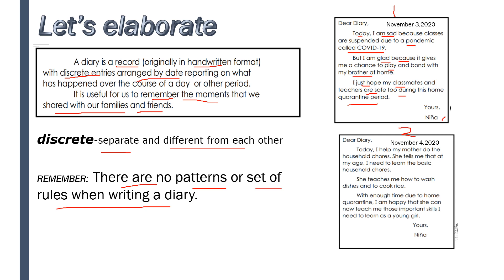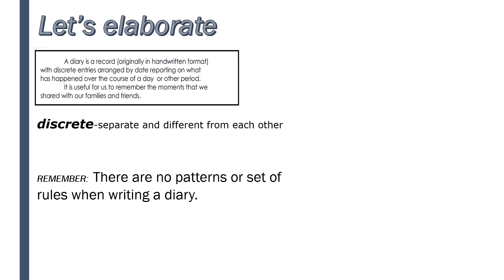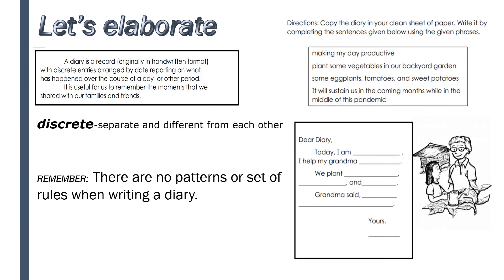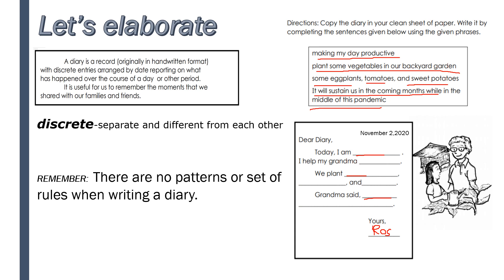That's how simple it is. Here is another example of a diary. I'm going to write a date: November 2, 2020. 'Dear diary, I am making my day productive. I helped my grandma plant some vegetables in our backyard garden. We planted some eggplants, tomatoes, and sweet potatoes. Grandma said it will sustain us in the coming months while in the middle of this pandemic. Yours, Rose.' You are going to write your name here.